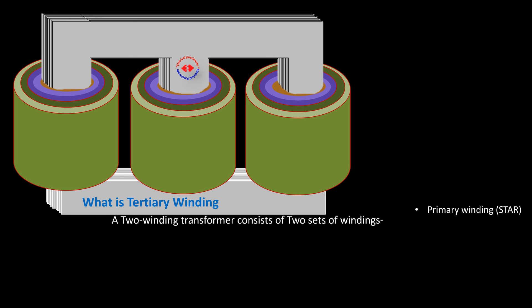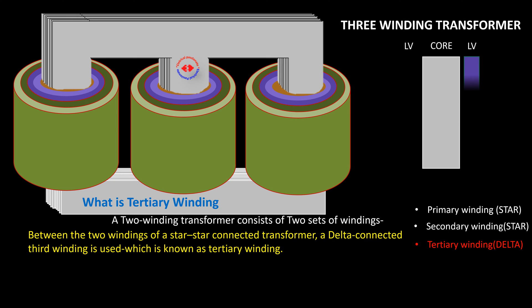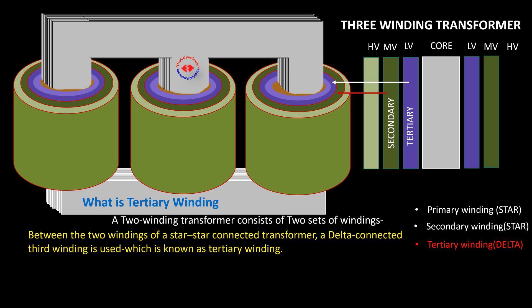The transformers are sometimes constructed with three windings. The main windings are connected to form star-star connection and the third winding known as tertiary winding is used to make a closed delta connection to stabilize the neutrals of both primary and secondary circuits. The tertiary also carries the third harmonic current.